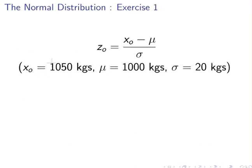The first example is 1050 kilograms, and those are the values there again. So, the Z-score is computed as follows.